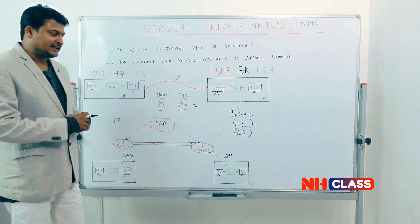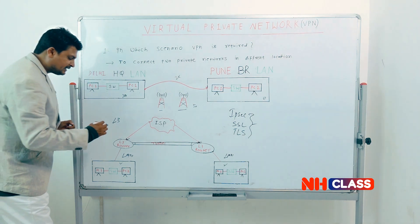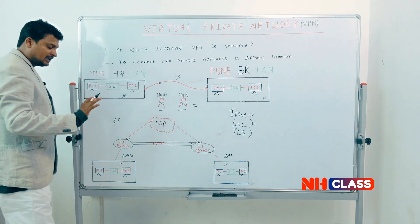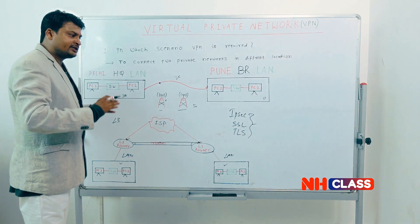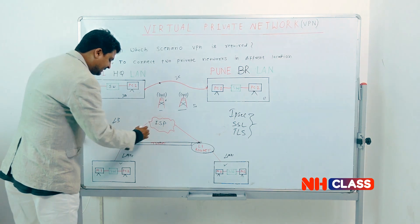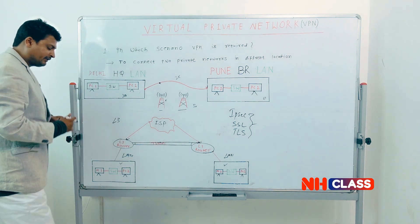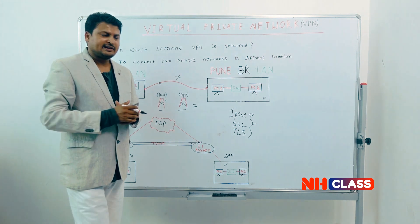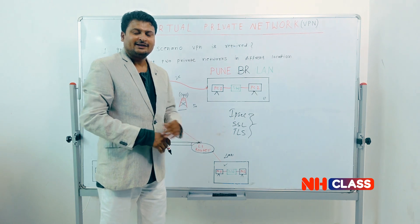The purpose of this video was to make you understand in which scenario VPN is required. VPN is required when you need to connect two different LAN networks in different locations, where wired and wireless connections are not possible. Through the ISP, we connect routers at two different sites, create a tunnel between them, and have secure connectivity between the two LAN networks at low cost. Thank you guys — in the next video I'll explain IPsec, TLS, and SSL protocols. See you soon.